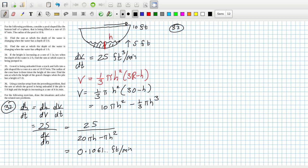Find the rate at which the depth of the water is changing when the water has a depth of 1 foot. So just change the 5 for h to 1, and that would be 0.4188 feet per minute.